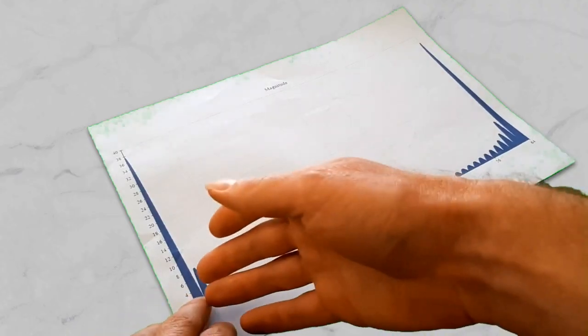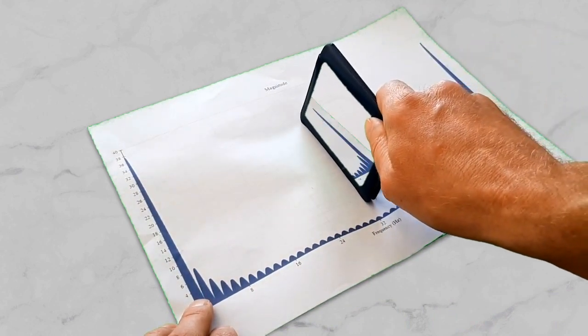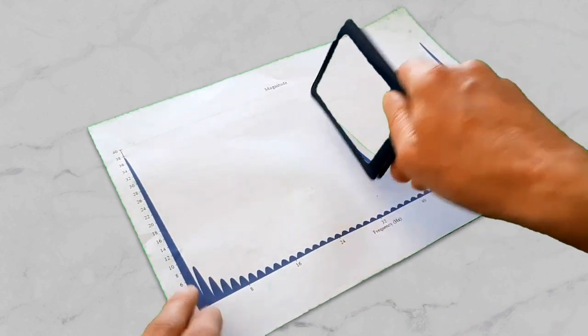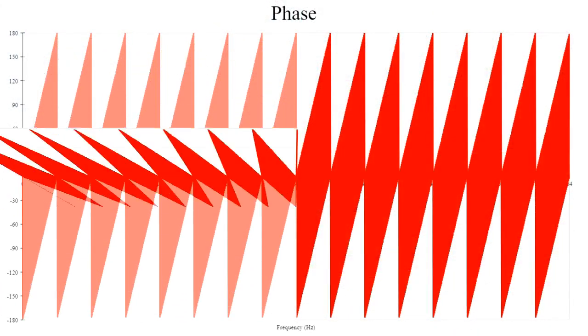Notice the symmetry in the magnitude graph. It's as if someone has put a mirror at this frequency here. A similar symmetry exists in the phase graph as well, it's just that the phase graph is flipped as well as reflected.